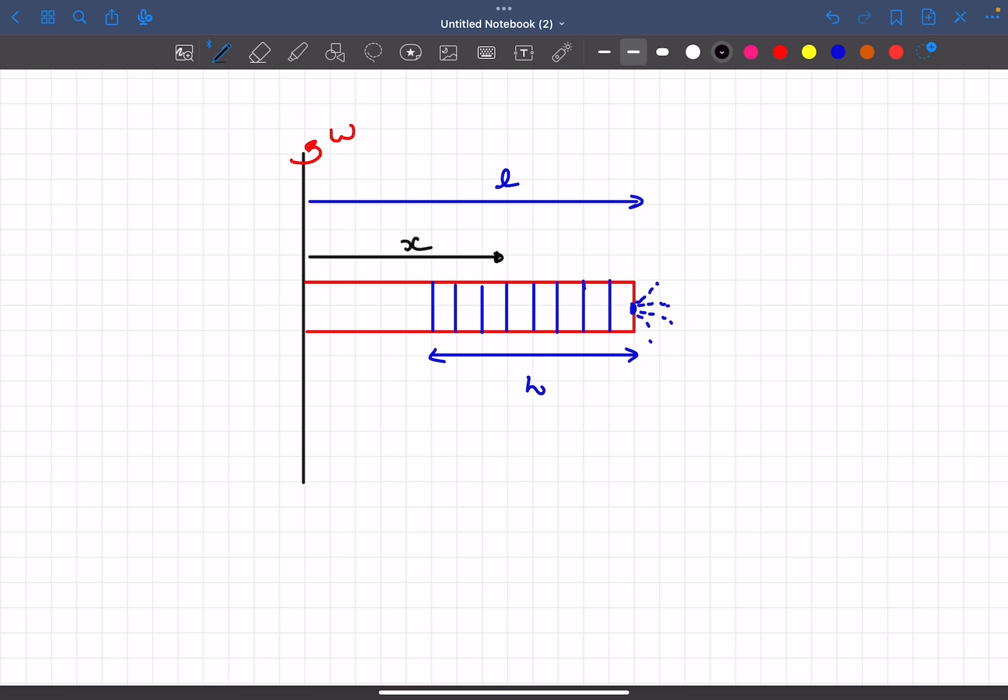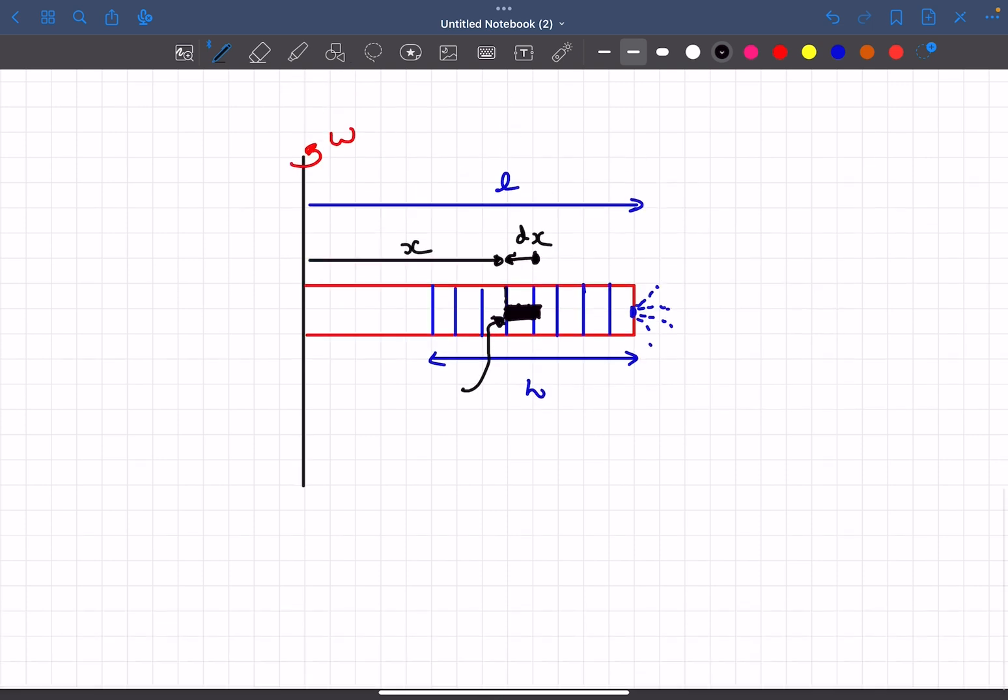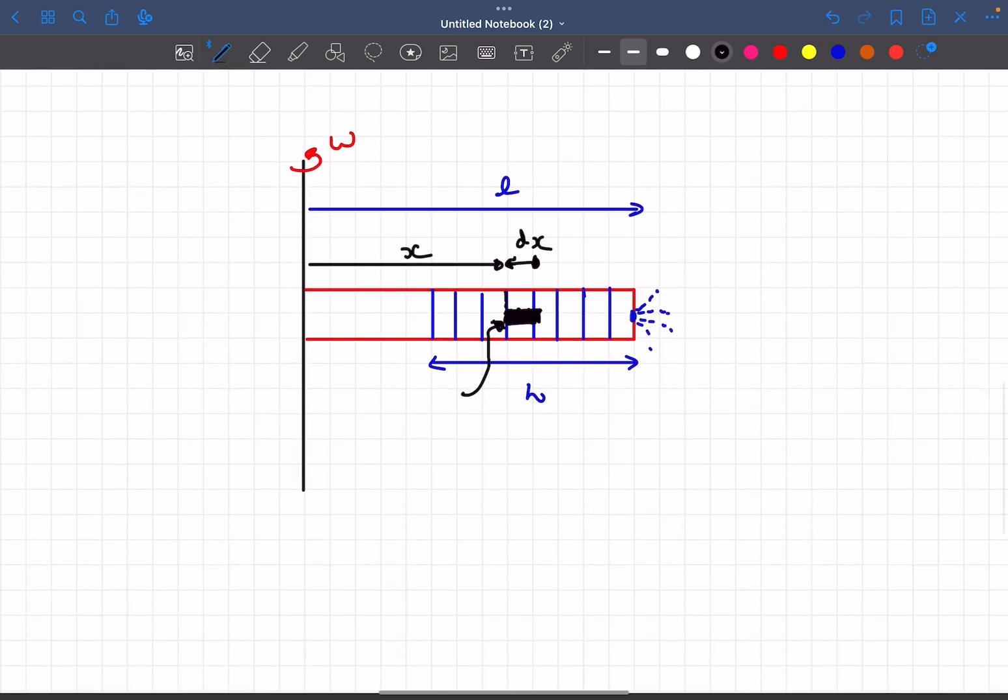Now let's consider a fluid element. Let's go a distance of x from the axis of rotation and pick a small element of width dx. This is the fluid element we're talking about, and let's determine the forces on it.